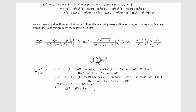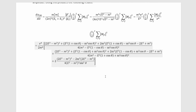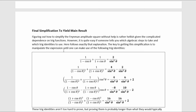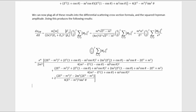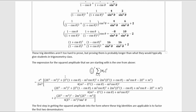The differential scattering cross-section formula simplifies down nicely, and we get a complicated messy expression for the squared Feynman amplitude. Figuring out how to simplify this without guidance is quite hellish given the complicated dependence on trig functions. However, it is easy if one knows which algebraic steps to take and which trig identities to use. The key is to manipulate the expression until one can make use of five specific trig identities — the simplification is non-obvious until these are applied, after which things become much more trivial.